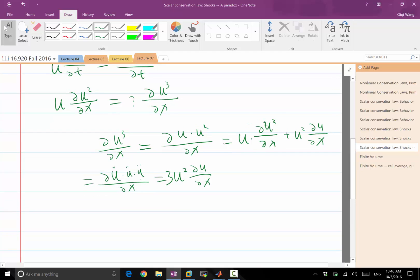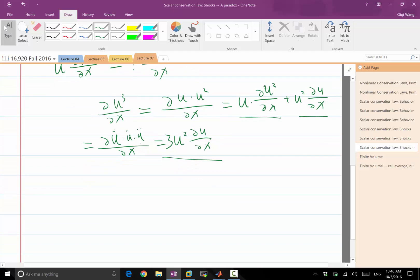So let me do the derivation. U² times ∂U/∂x equals one third of ∂U³/∂x. Now substitute this into that equation. We get ∂U³/∂x equals U times ∂U²/∂x plus one third of ∂U³/∂x.